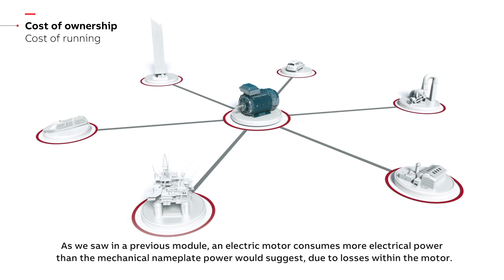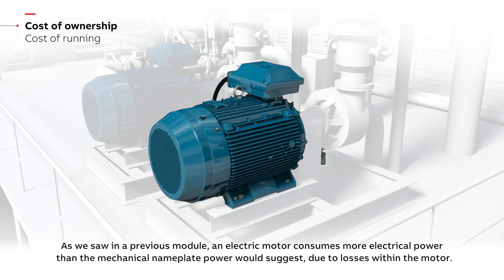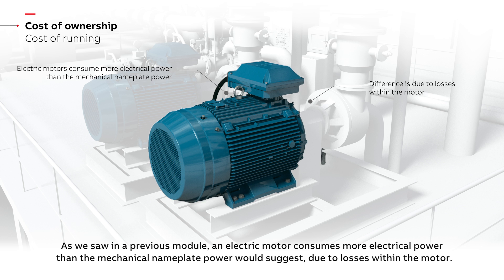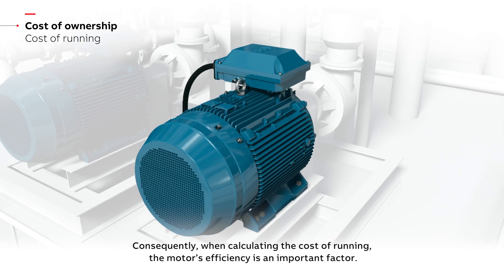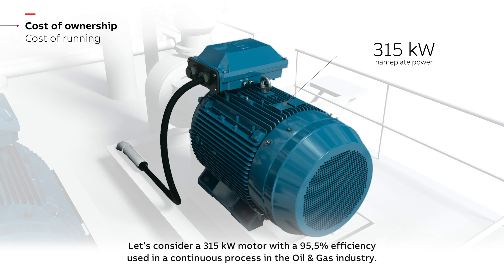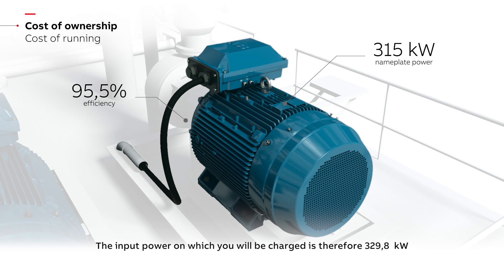As we saw in a previous module, an electric motor consumes more electrical power than the mechanical nameplate power would suggest due to losses within the motor. Consequently, when calculating the cost of running, the motor's efficiency is an important factor. Let's consider a 315 kilowatt motor with a 95.5 percent efficiency used in a continuous process in the oil and gas industry. The input power on which you will be charged is therefore 329.8 kilowatts.